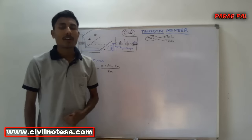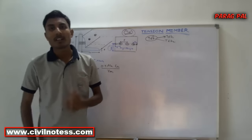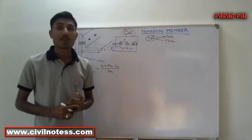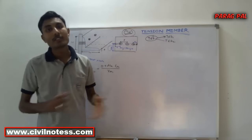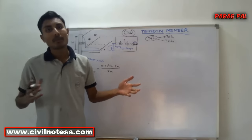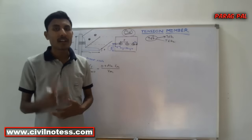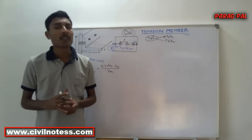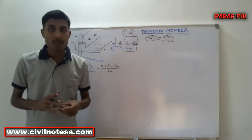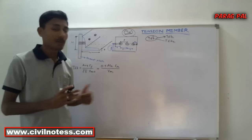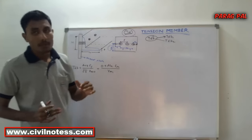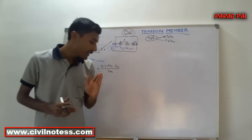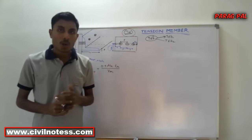This is Part 2. I'm really sorry because in Part 1 I did not take all the values in a proper manner, so I made sure to split it into two separate parts. So let's continue from Part 1 — in Part 1 we calculated Tdg, Tdn, and Tdn.